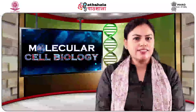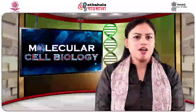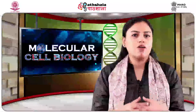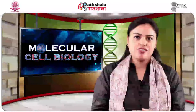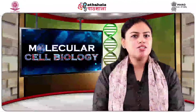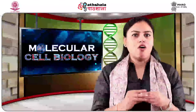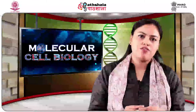All categories of cell-cell adhesion junctions function by a two-component system: the intracellular attachment proteins, which mediate attachment of cytoskeleton filaments on the inside of the plasma membrane to the junction, and the cadherins which overhang from the cell surface and interconnect cells to each other. The cell junctions can be broadly grouped into adherence junctions and desmosomes, and the transmembrane adhesion proteins of this type belong to the cadherin family.